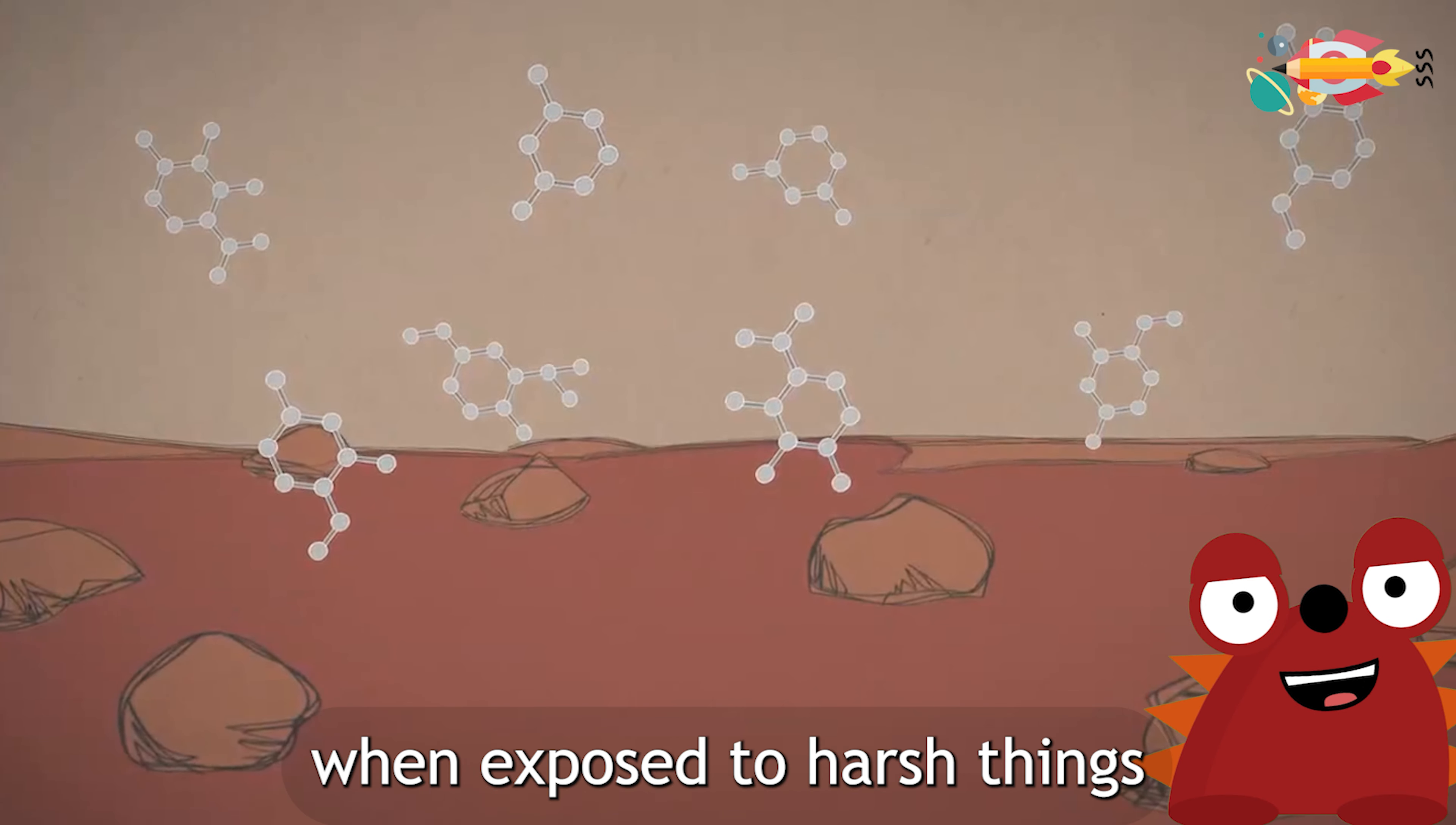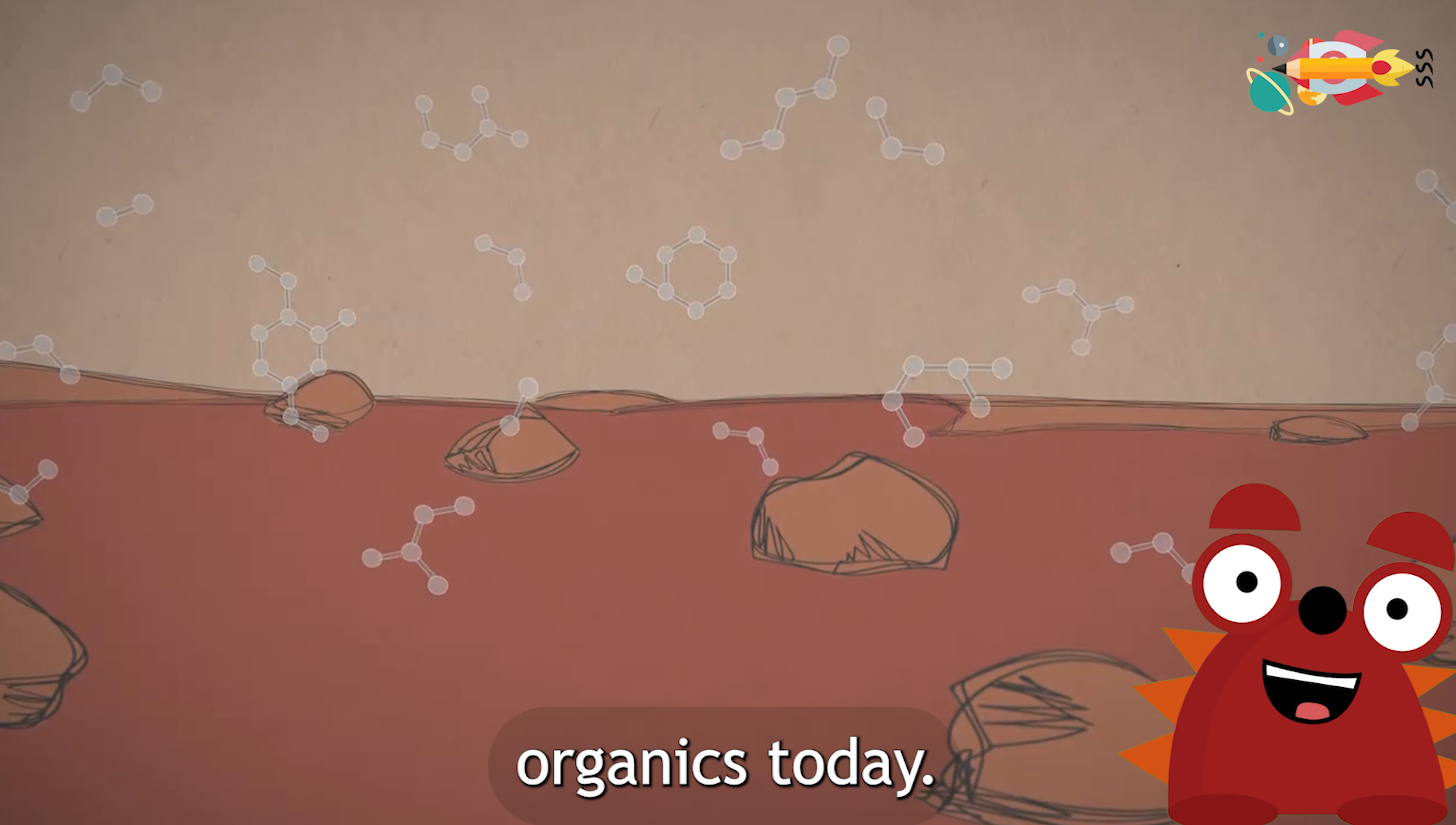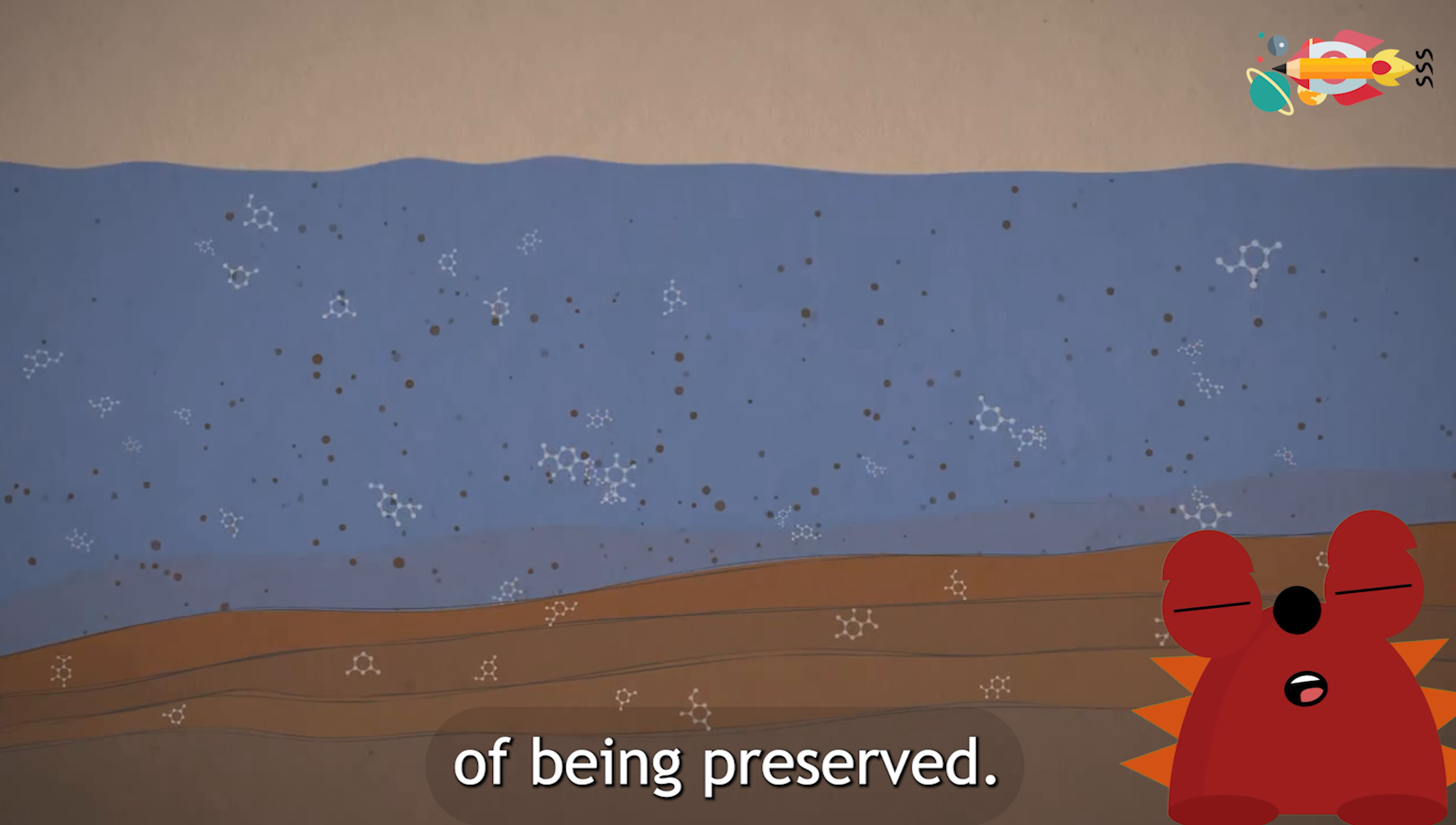That's because organics easily break down when exposed to harsh things like extreme radiation and chemical oxidants that gave the Martian surface its rusty color. A great place to look for ancient organics today is in rock layers. Organics that were quickly trapped and buried in layers of mud or in sediments that sank to the bottom of a body of water could have an especially good chance of being preserved.